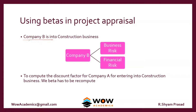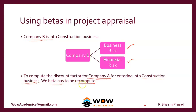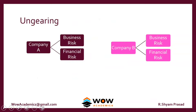Construction company B also has two kinds of risk: one is business risk and financial risk. To compute the discount factor for company A, the supermarket company, for entering into construction business, we have to find the beta. But the beta has to be recomputed. We cannot use the discount factor of company A or company B. Why? We will check in the next one — why cannot we use the discount factor of company A and company B for valuing this new thing?